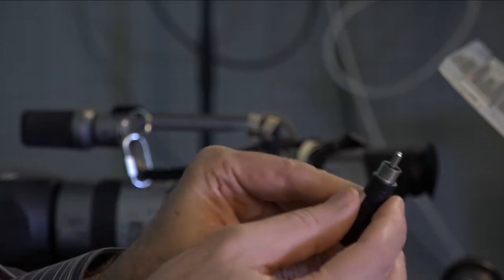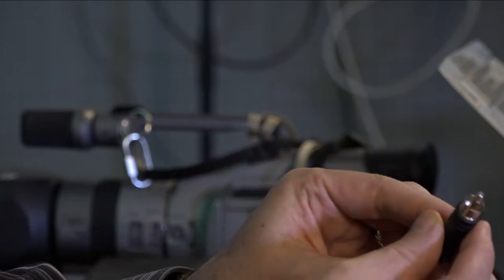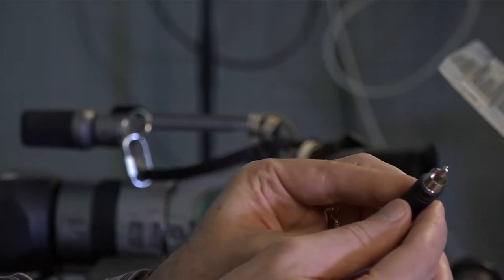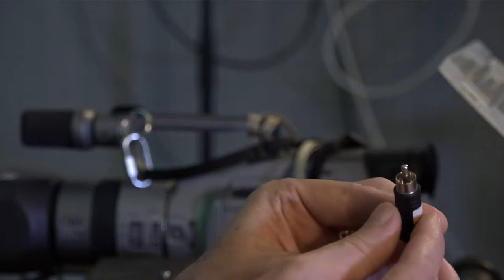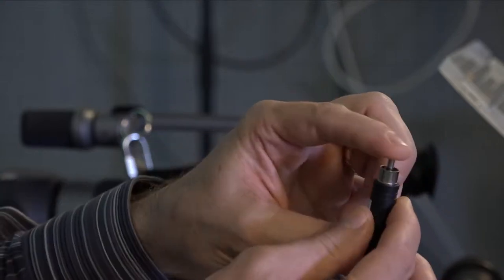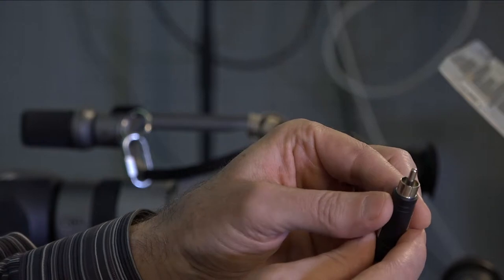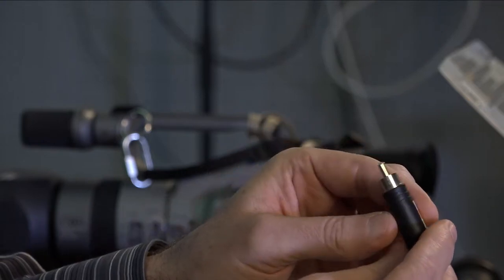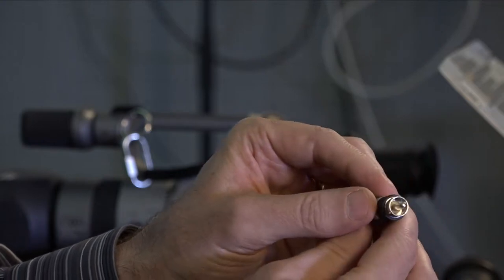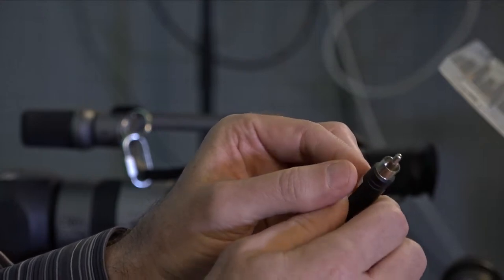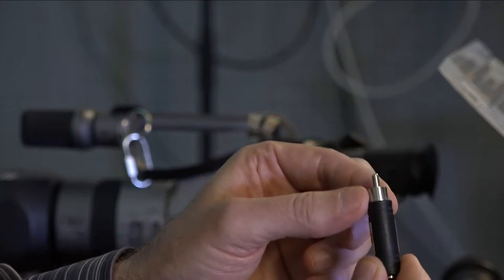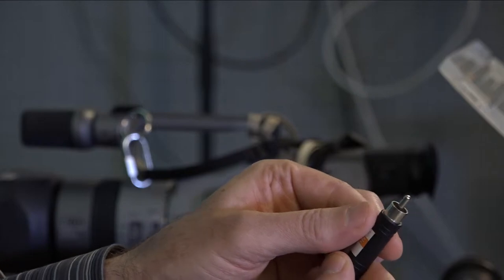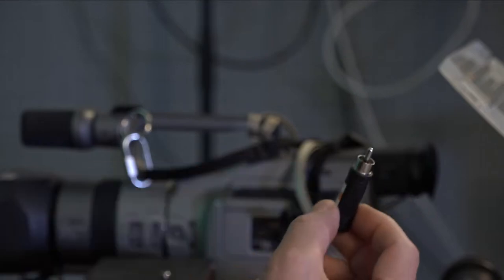And then there's another kind of jack that we sometimes see. And that's this one here. Which is round. And has a protuberance out there in the center there. And this is mono. This is not stereo. It carries one signal. And this is called an RCA jack. RCA jack.